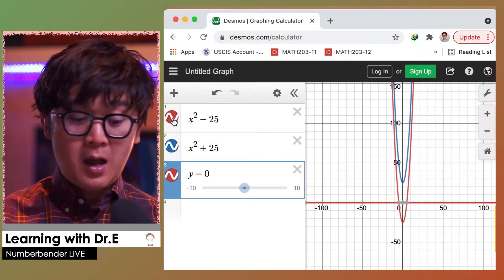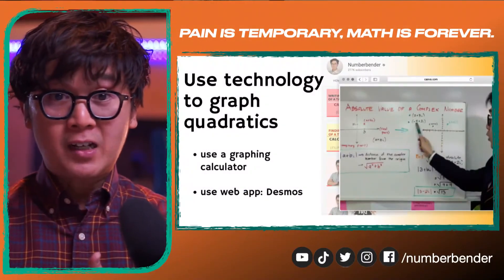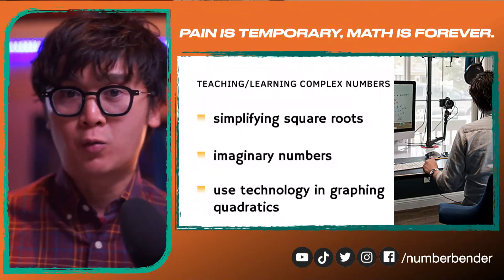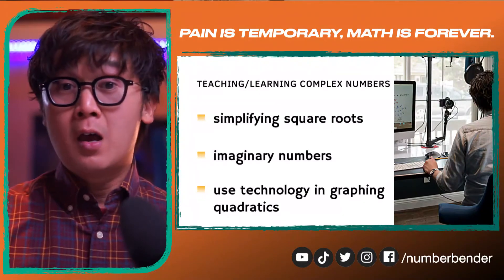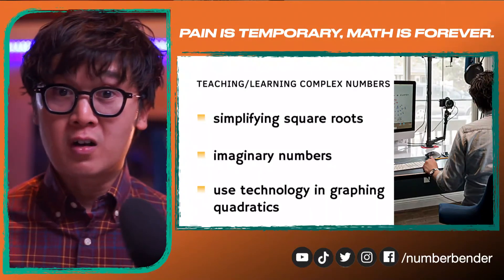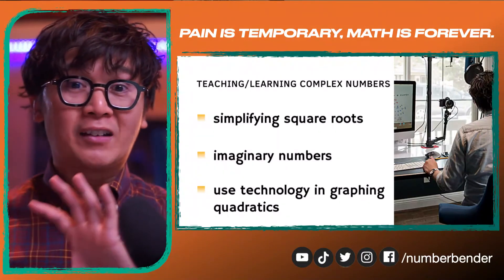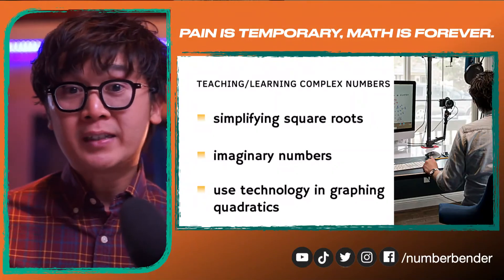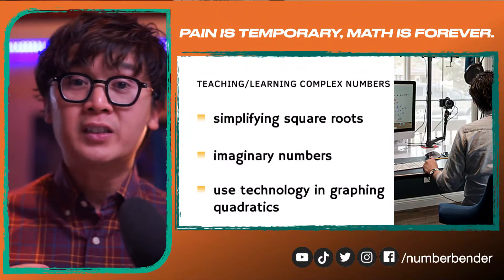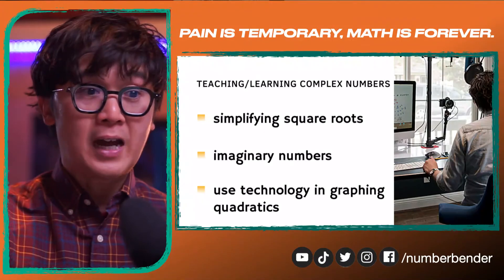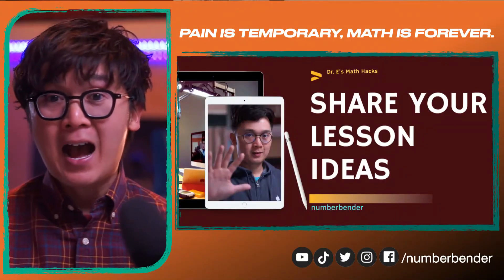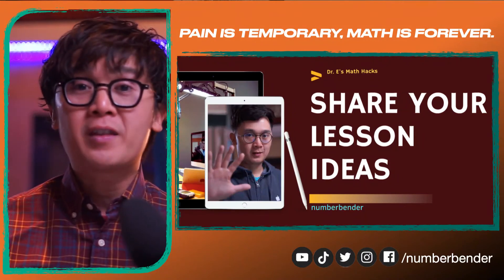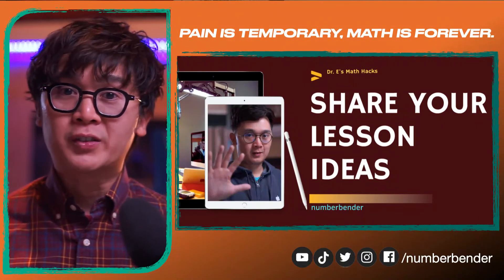This is how I share imaginary numbers and complex numbers with my students, making sure they understand every detail in the lesson. To summarize: students need to master their multiplication table for simplifying square roots; they need to understand that i equals the square root of negative 1 and how to factor it out; and we use technology to graph quadratics so they understand why some quadratic equations have solutions and others do not.